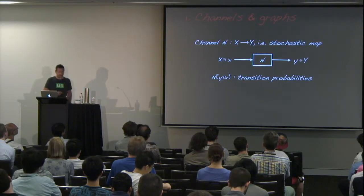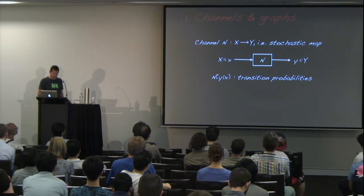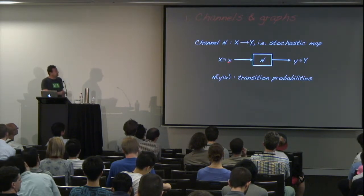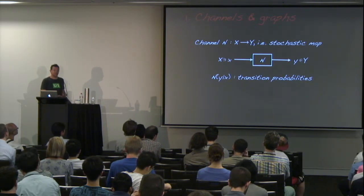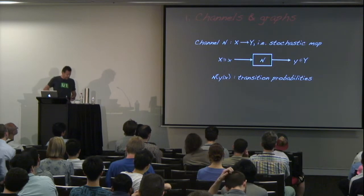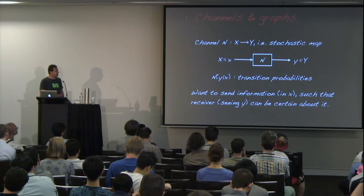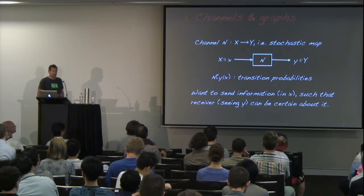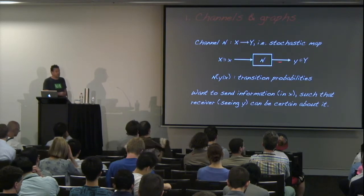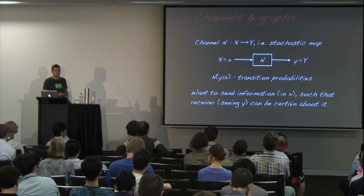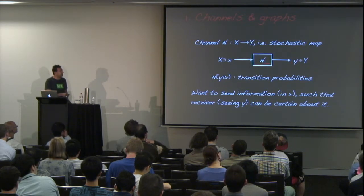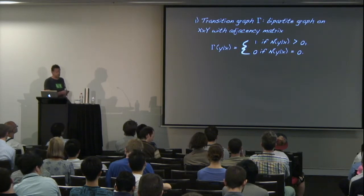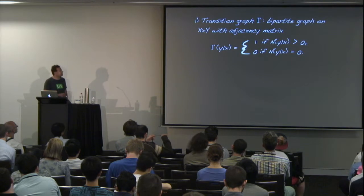Like in the previous talk, we are concerned with communication via channels — sending classical messages over a noisy channel. I'll start with the simple setting of a classical channel, which is just a stochastic map between input and output alphabets, given entirely by a matrix of transition probabilities. Our objective is to send information encoded in X such that the receiver who sees only Y can be certain about the message. For deterministic decoding, only whether transition probabilities are zero or non-zero matters.